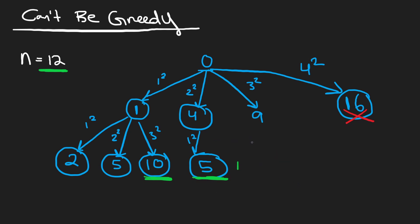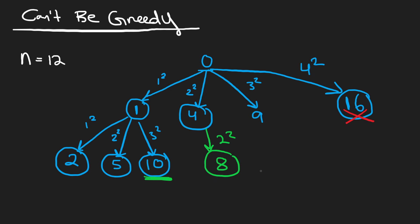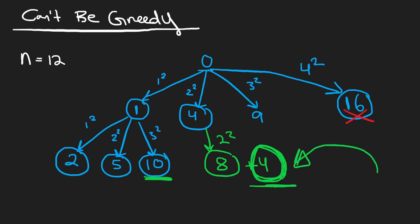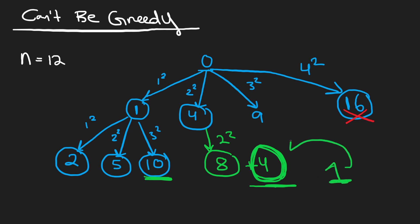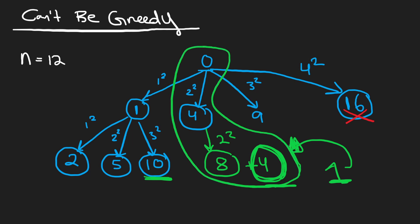The actual optimal answer follows a different path: from sum 4 we take another 2 squared to reach 8. From 8 we're looking for 4 more, and we know 2 squared equals 4 exactly — so it takes just 1 perfect square to reach 4. So the total along this path is 3 perfect squares, which is indeed the minimum.